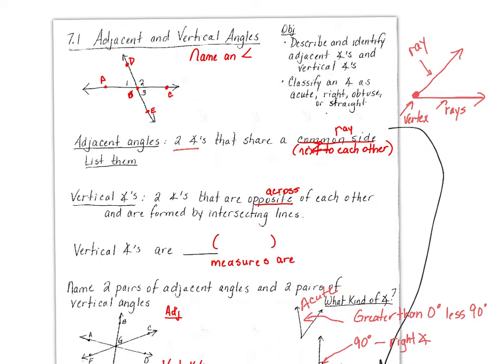So when we are naming an angle, we name the angle with the vertex in the center. If I'm going to name this angle right here, I call it angle A, B, D. The vertex point B is in the middle. I could also call it angle D, B, A. You just have to make sure that the vertex is in the center.